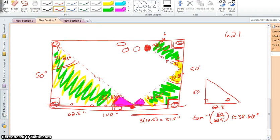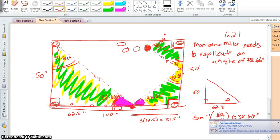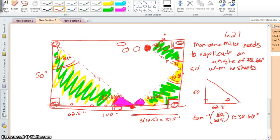So we know that the angle that Montana Mike is trying to shoot at is 38.66 degrees. So let's make note of that. Montana Mike needs to replicate an angle of 38.66 degrees when he shoots from the top rail.